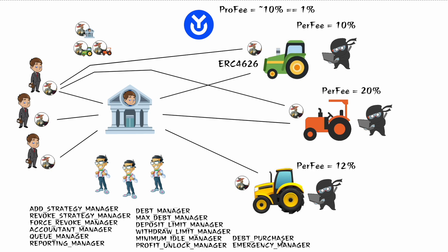The Debt Purchaser handles bad debt — whether from a force revoke or a strategy getting hacked. This role can buy that bad debt to make users whole again, essentially acting like an insurance policy for Dollar Bill DAO. The Emergency Manager simply shuts the vault down in panic mode — halt everything, find out what's going on, then turn it back on and assess how to deal with the situation.